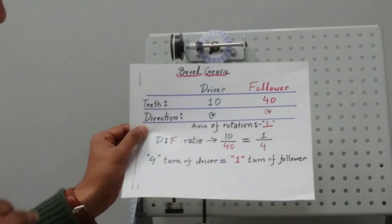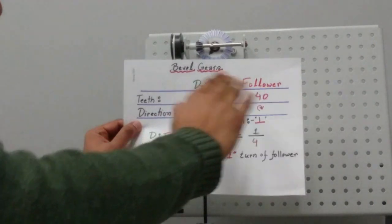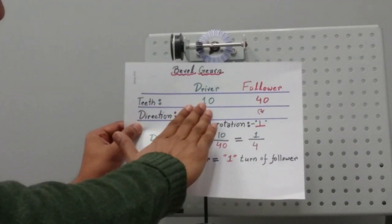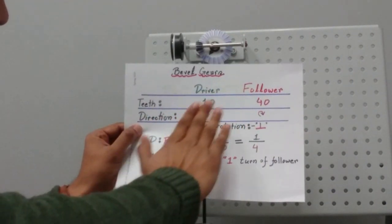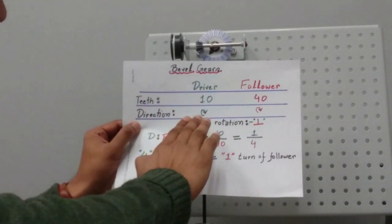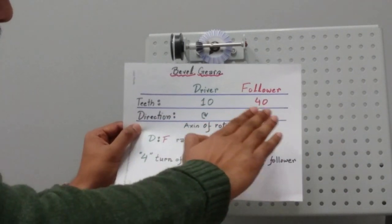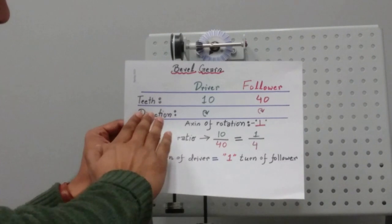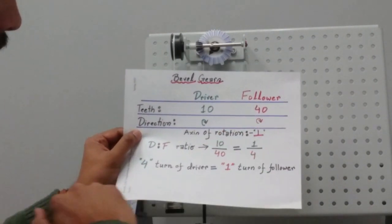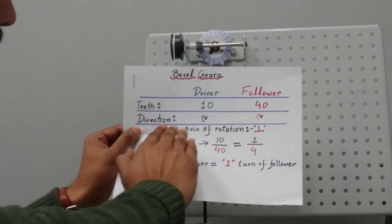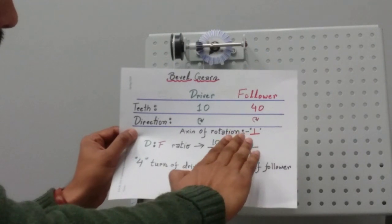So in a nutshell, in our bevel gear setup here we have driver and follower. The driver has 10 teeth and the follower has 40 teeth. The direction of rotation are in the same direction, meaning if my driver is rotating clockwise, the follower will rotate clockwise. If my driver is rotating counterclockwise, the follower will rotate counterclockwise, though the axis of rotation is perpendicular.